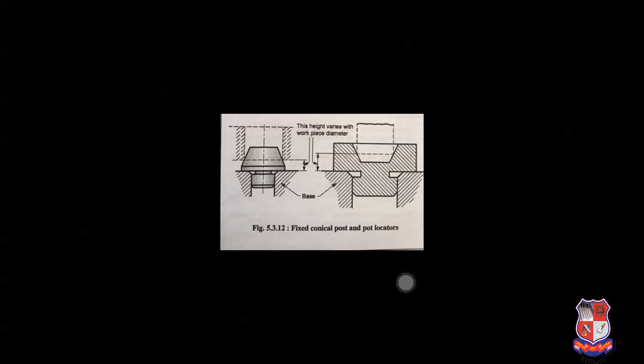The benefit of the conical shape is that for objects where the diameter is not uniform, the conical locator still accommodates the workpiece. If the diameter is too large at the entry point, the workpiece will not insert fully — it will lock into position at the correct conical contact point. This is how the conical locator works.